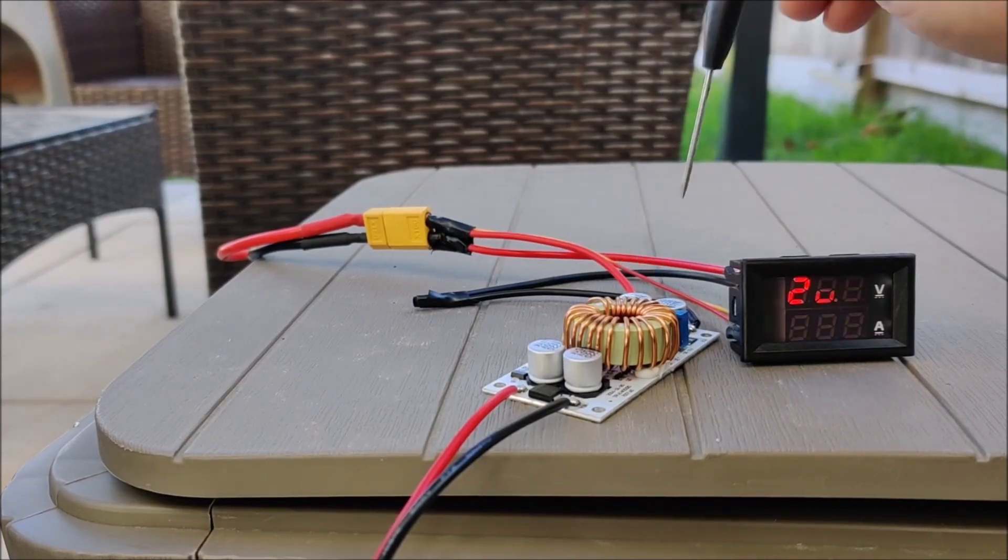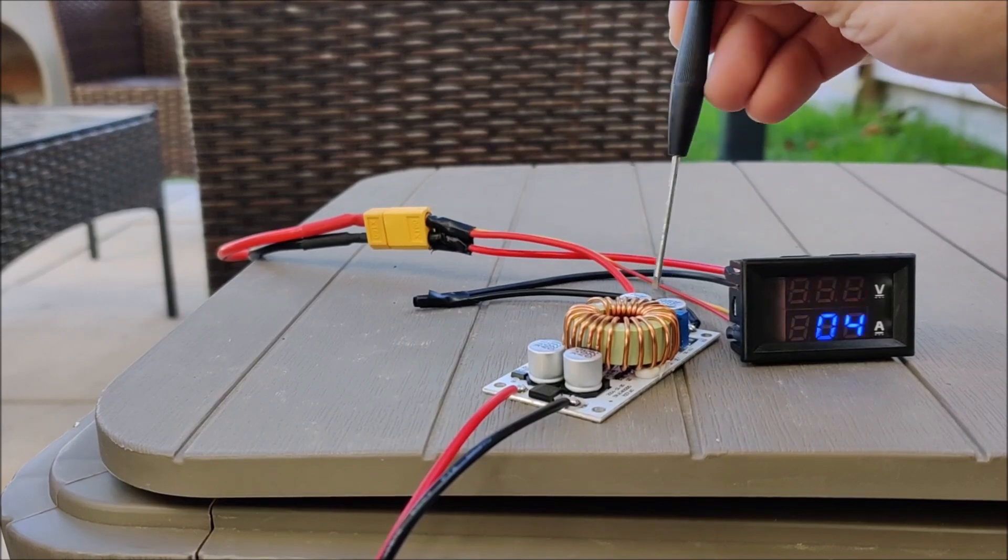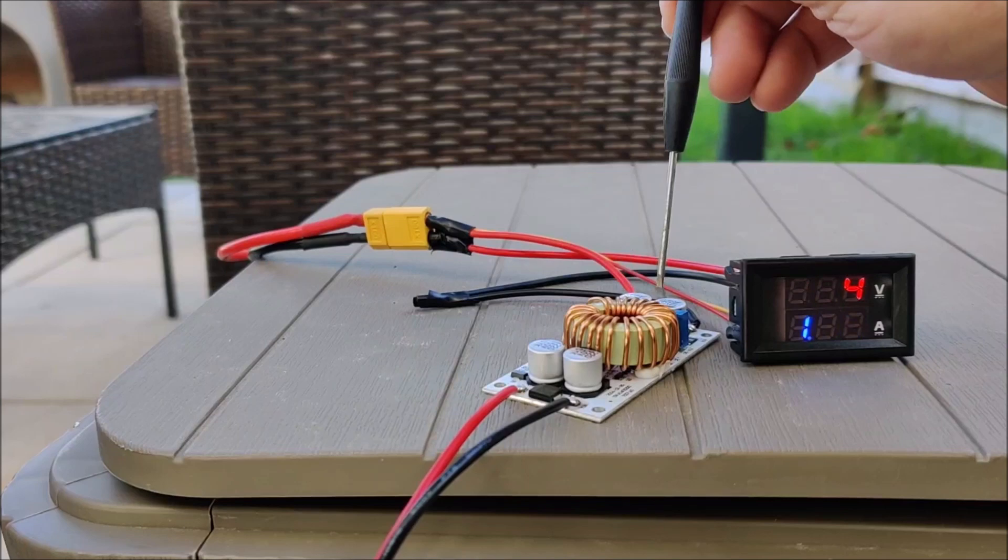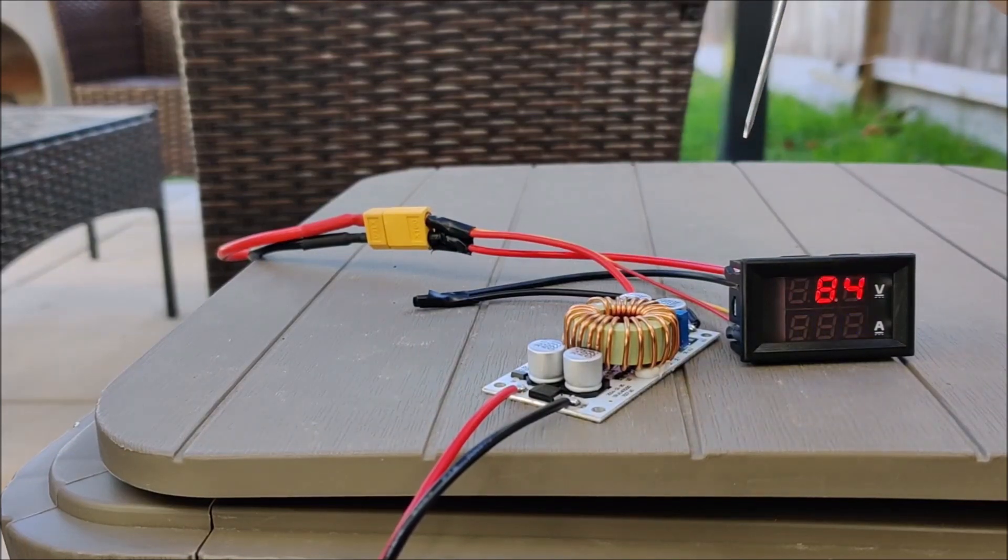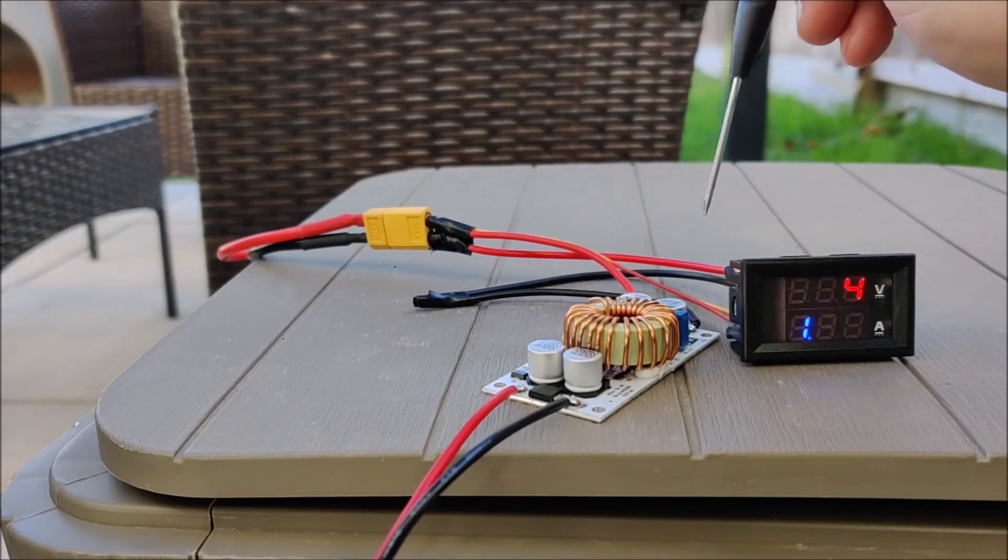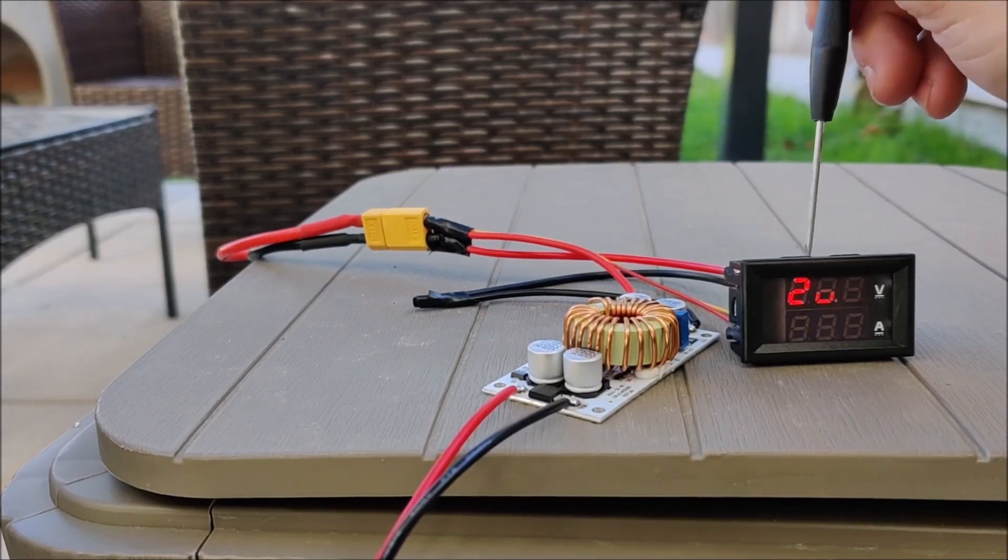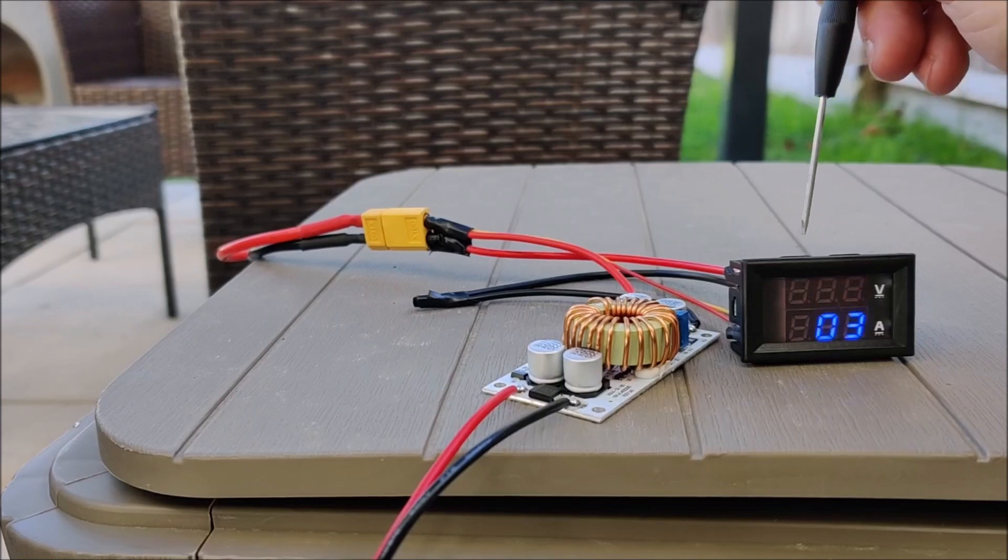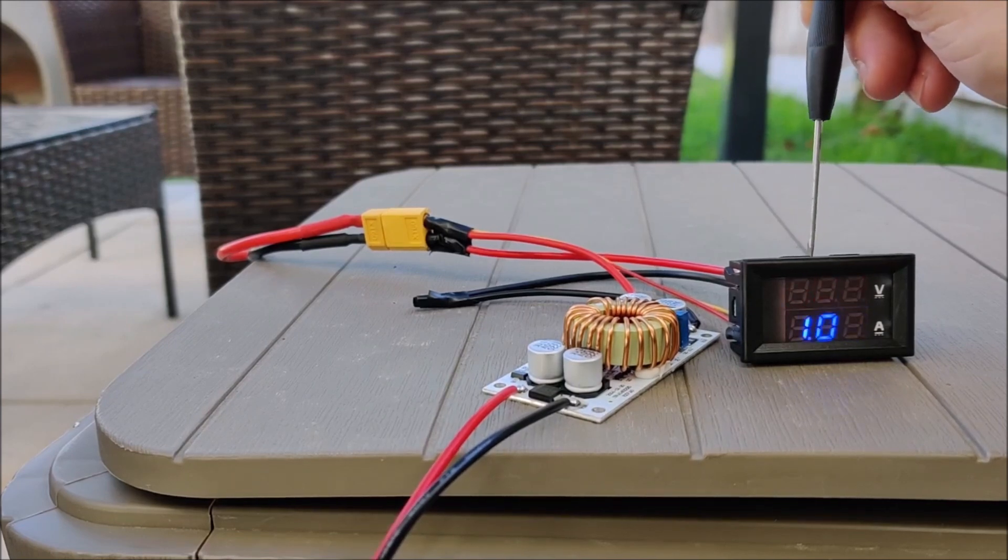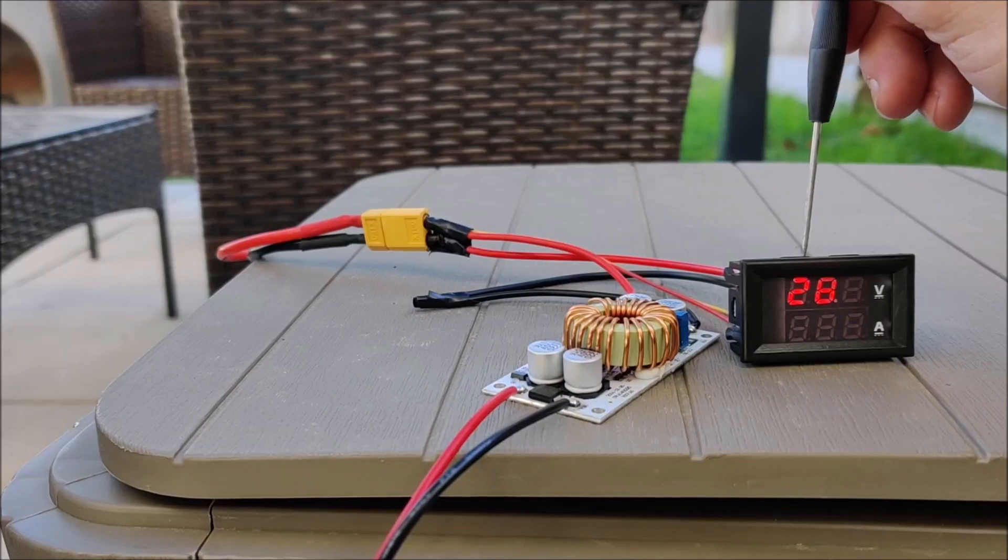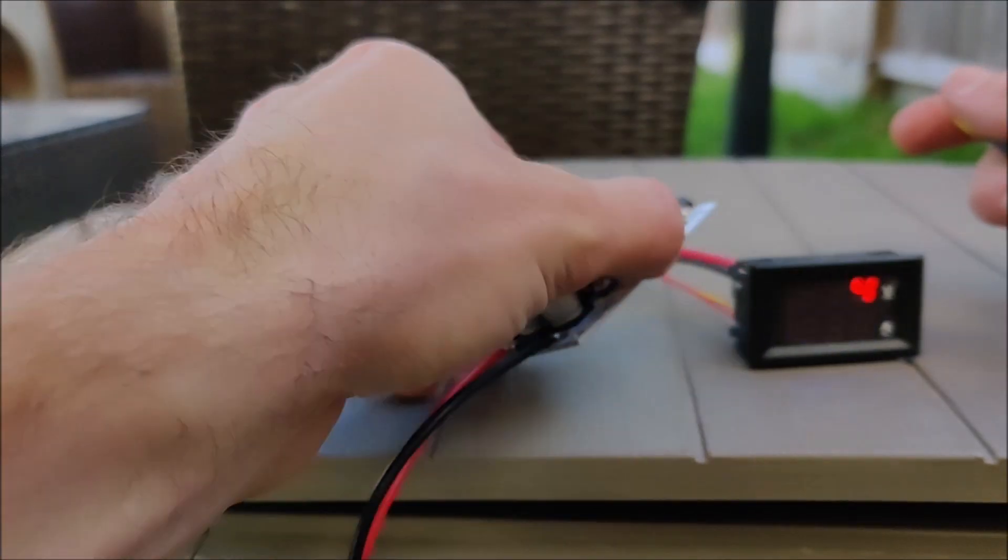If I use this permanently, I'd probably hot glue these adjustment screws once I have it the way I want it because they are sensitive and we don't want this to change on us. We need it to stop and max out at 29.3 volts.